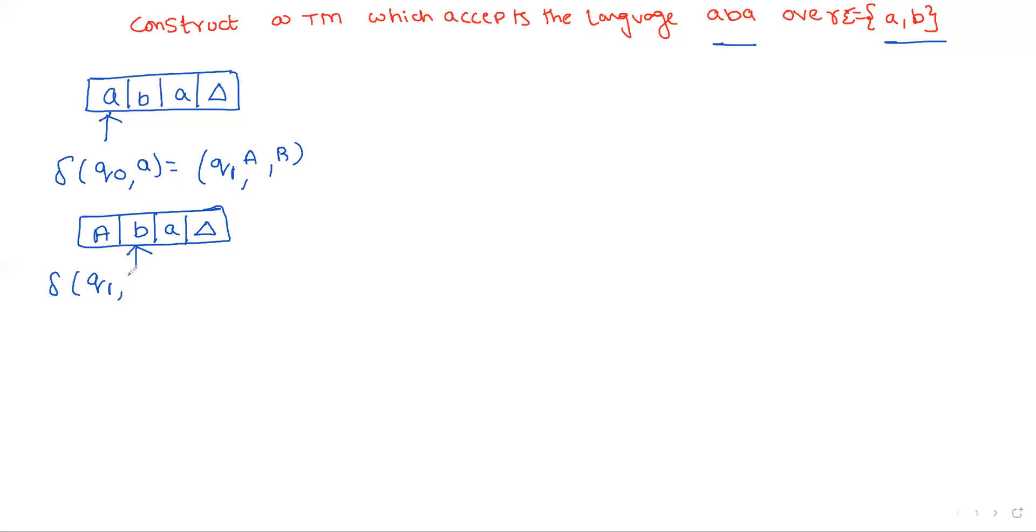Now I am at state q1. If you are receiving an input symbol b, the same thing: small b is replaced with capital B. Move to some state, move to state q2. Now capital A, capital B, a, and blank. The head is at this position.